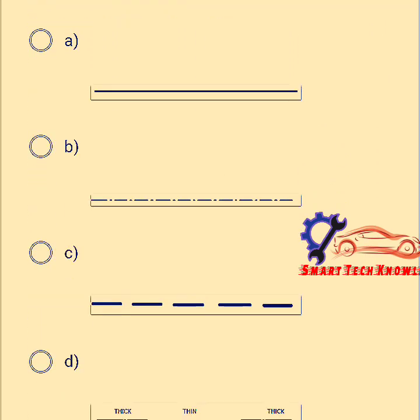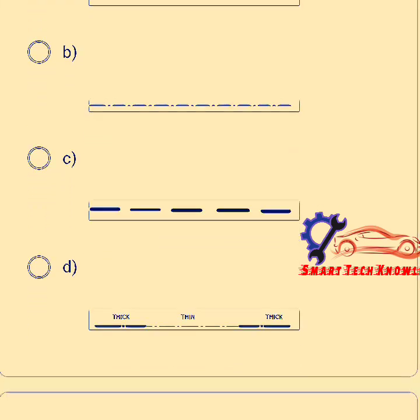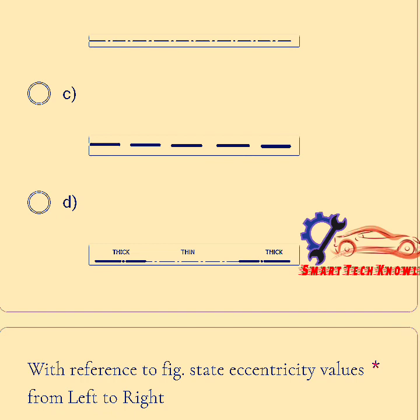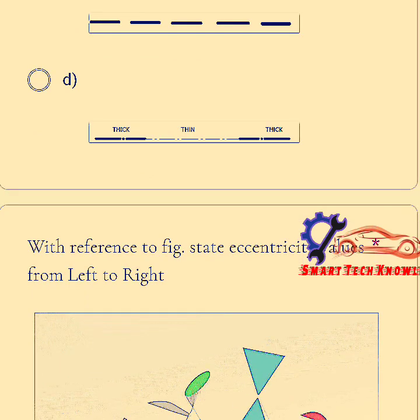Identify the correct line type for cutting plane. I'll explain all the lines. Option A represents a continuous thick visible line, so that is outline. B is centerline. C is a dashed line or hidden line. And the last one, the correct answer for cutting plane, we show the line like this so ends are thick.